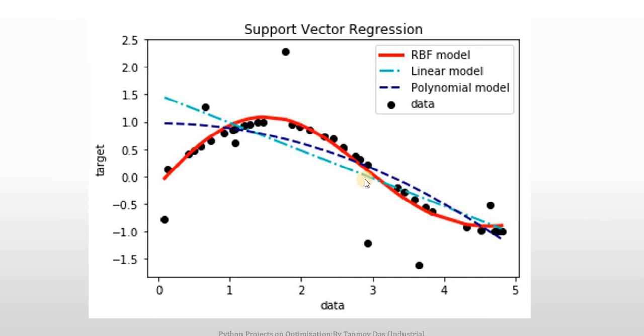it is predicting the data points more accurately compared to linear model or polynomial models. So for our case, for this particular dataset, Radial Basis Function is the best model.